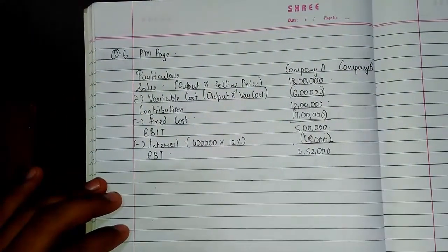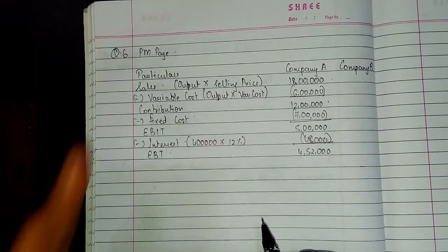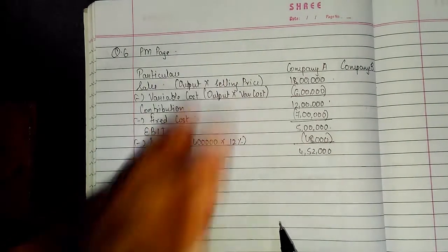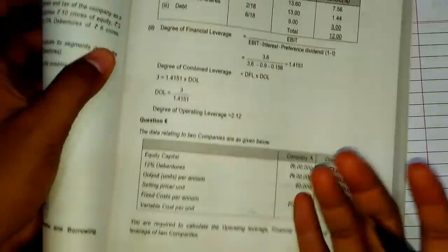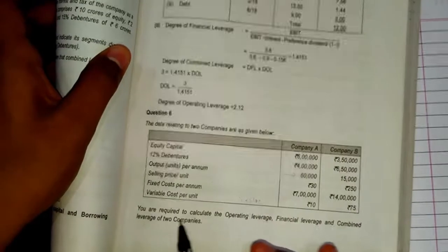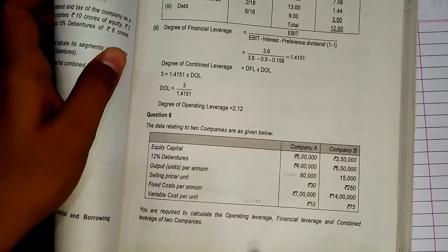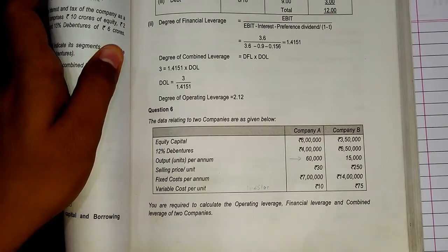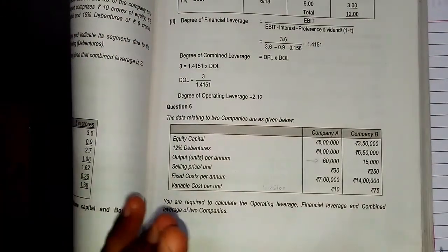We will now calculate operating leverage, financial leverage, and combined leverage. The question does not specify the dynamic formula — if they had asked for the degree of operating leverage, degree of financial leverage, or degree of combined leverage, they would have written it specifically. So we simply find out the static formula. Do not show your smartness in the exam by solving both formulas.